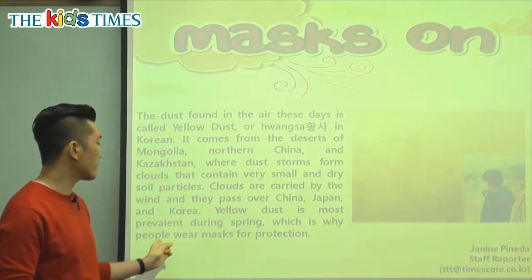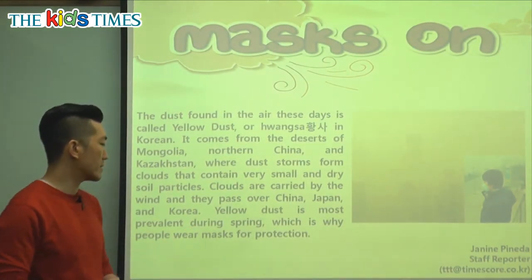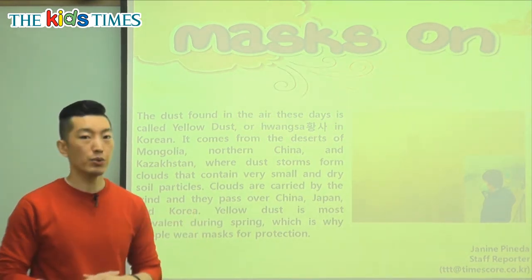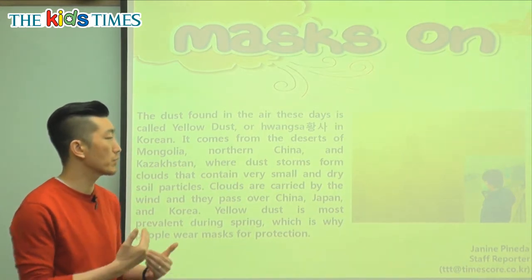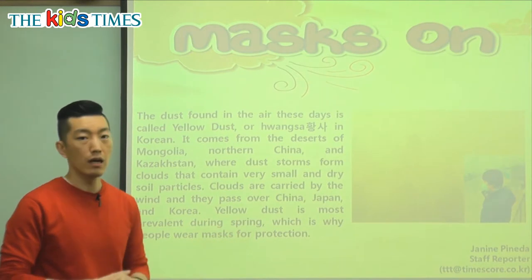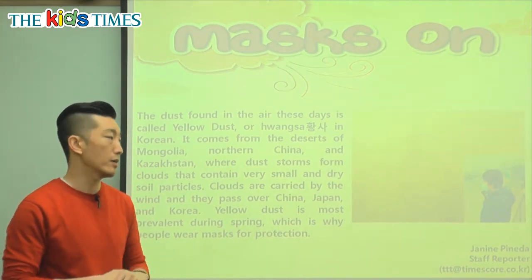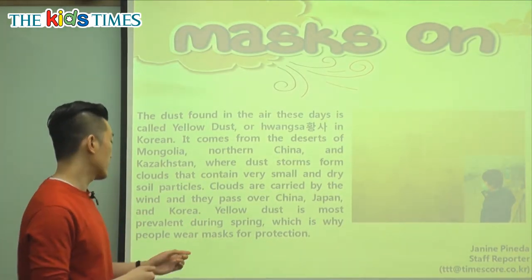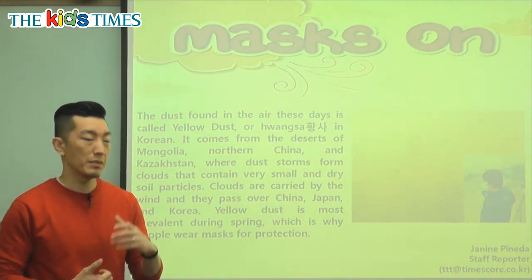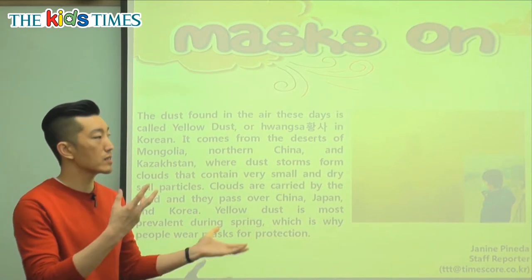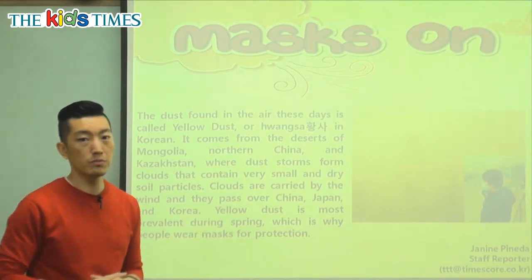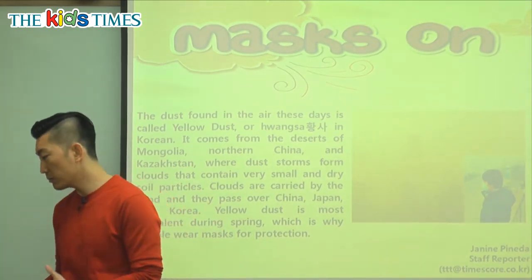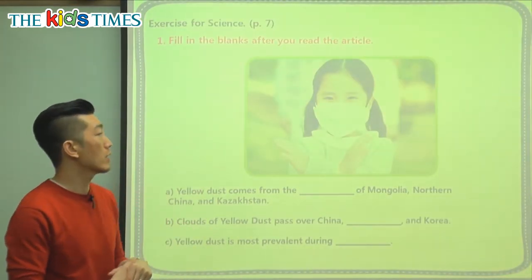Yellow dust is most prevalent during spring, which is why people wear masks for protection. Prevalent means it's the most common — that's when it becomes the biggest problem for us. It's usually the worst in spring, around March, April, and May. That's when we can see the most amount of yellow dust, and this is why many people wear different kinds of masks when they go outside. Now we know exactly where it's coming from and what we need to be careful of.